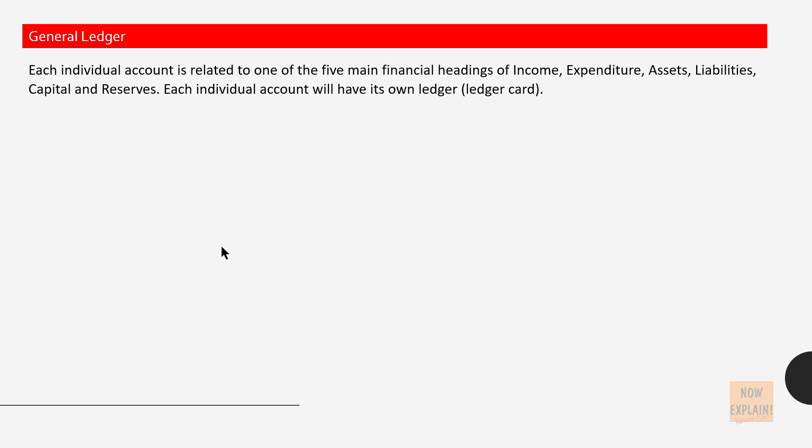Each individual account is related to one of the five main financial headings of income, expenditure, assets, liabilities, and capital and reserves. Each individual account will have its own ledger or a ledger card.